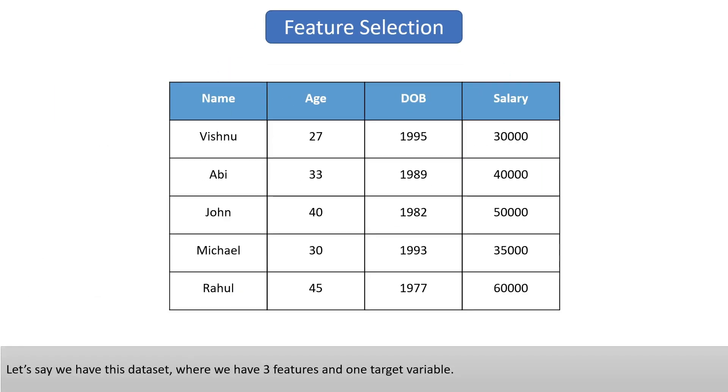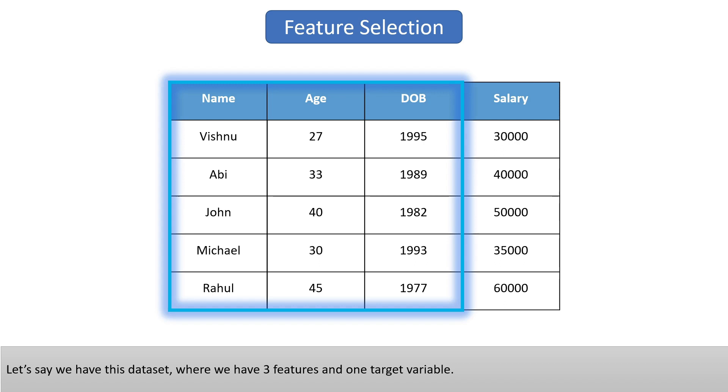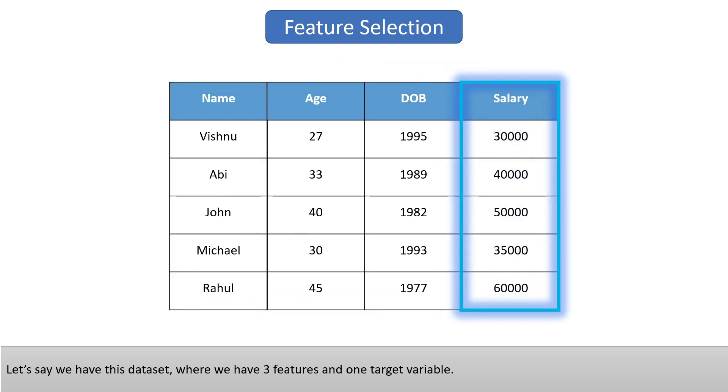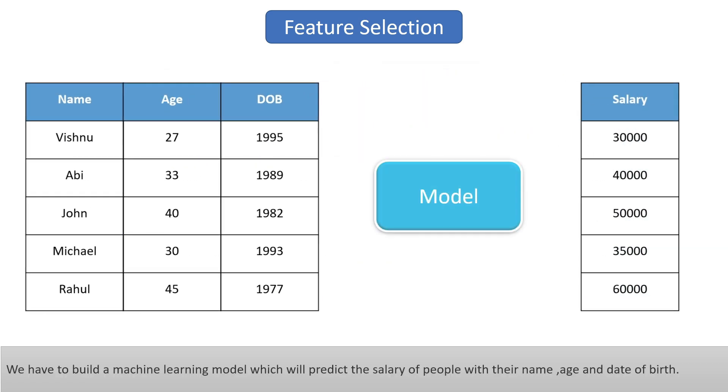Let's say we have this dataset where we have three features and one target variable. We need to build a machine learning model that predicts people's salaries using their name, age, and date of birth. But to predict salary, we don't need all of these features.